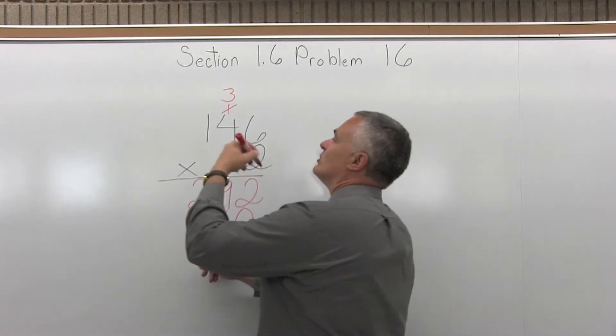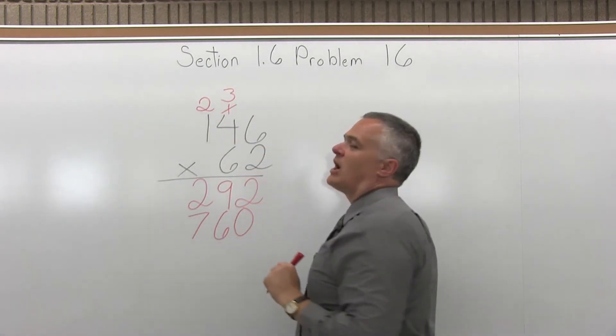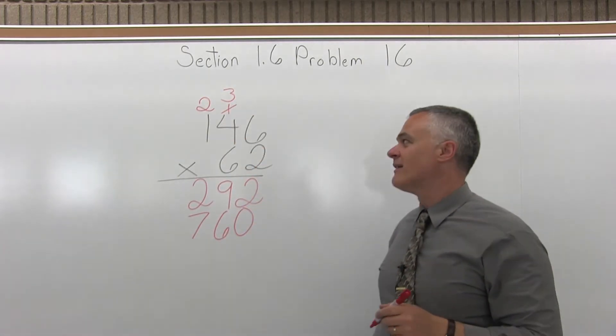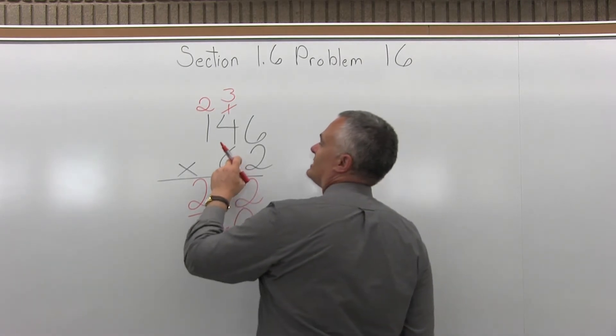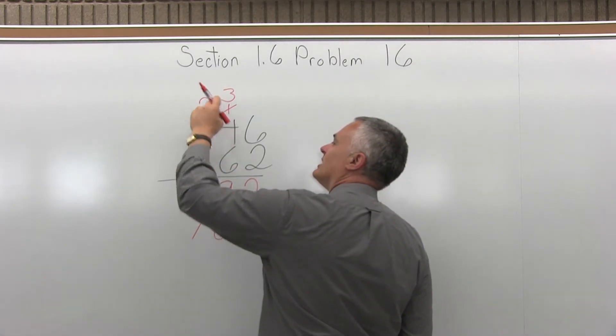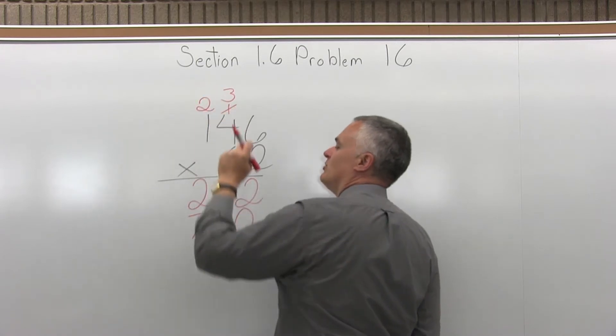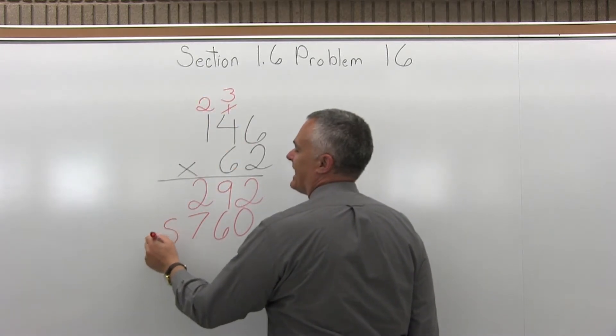And then take the 2 from the 27 and carry it to the top of the next column over to the left. And now I will multiply 6 times 1 and add the 2 that I carried. 6 times 1 is 6. 6 plus 2 more that was carried from before is 8.